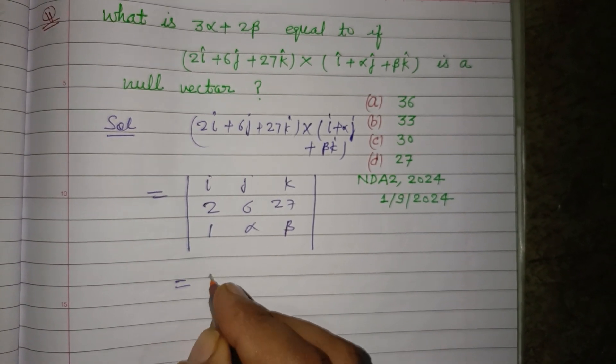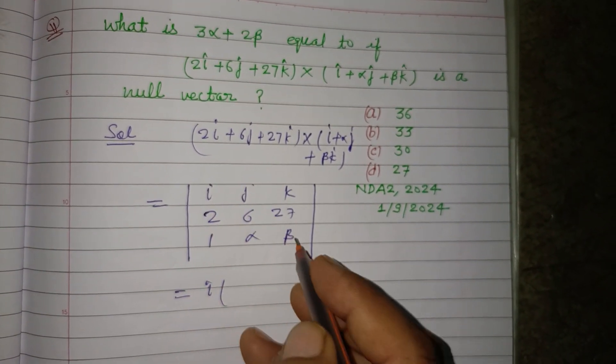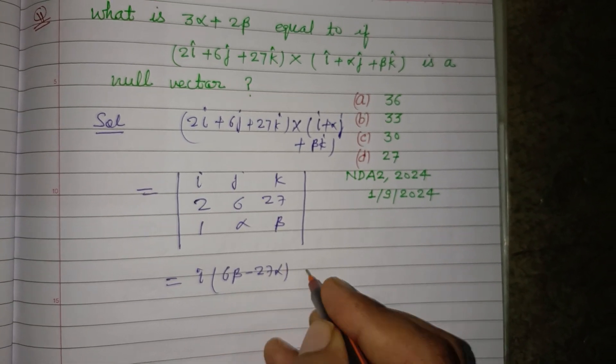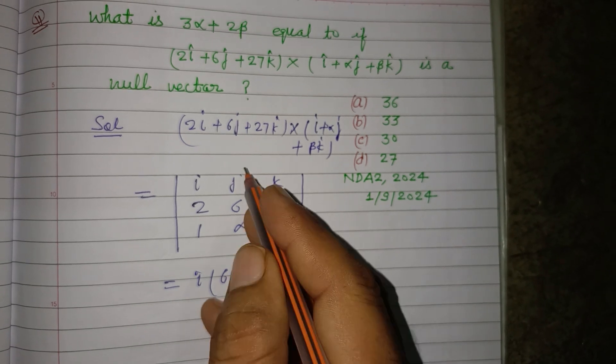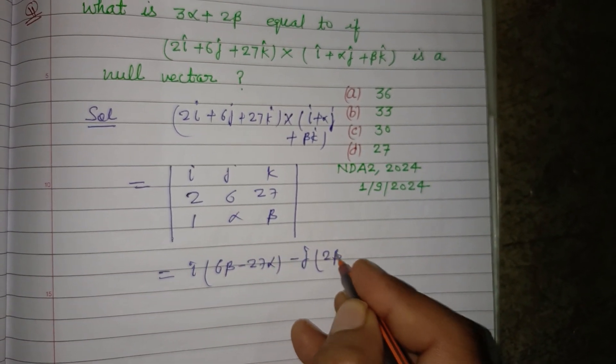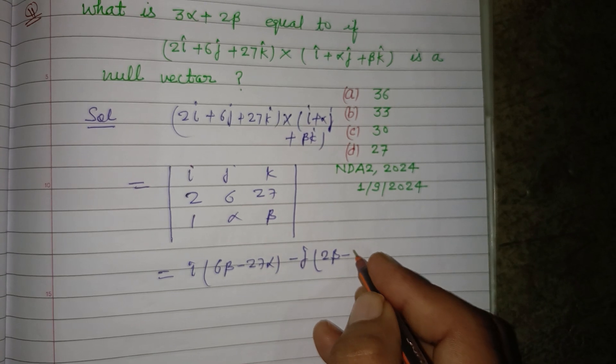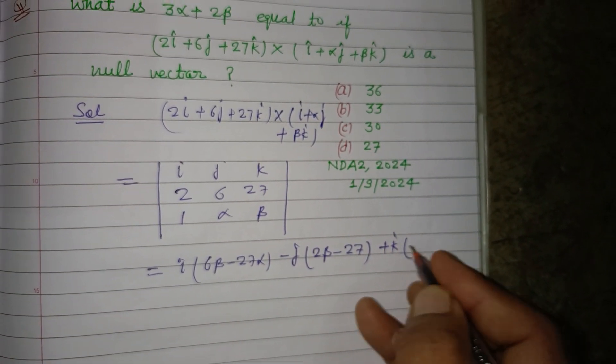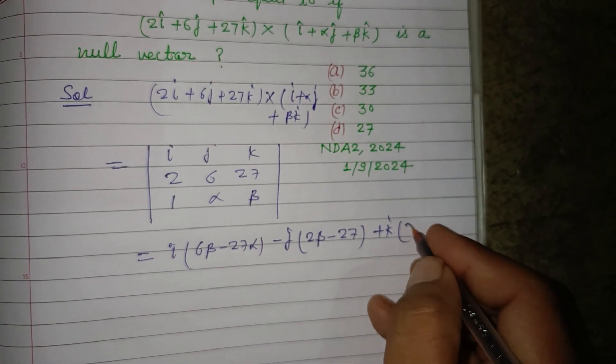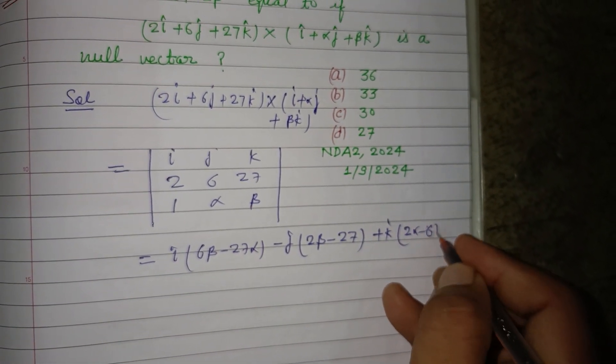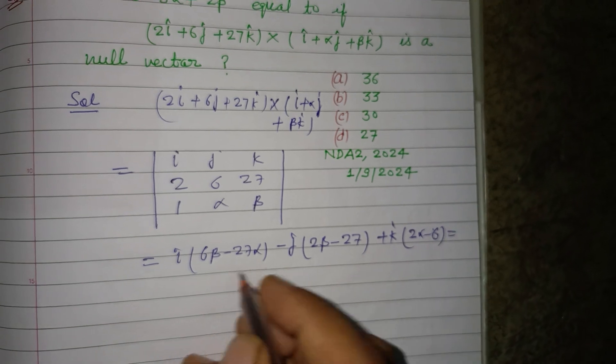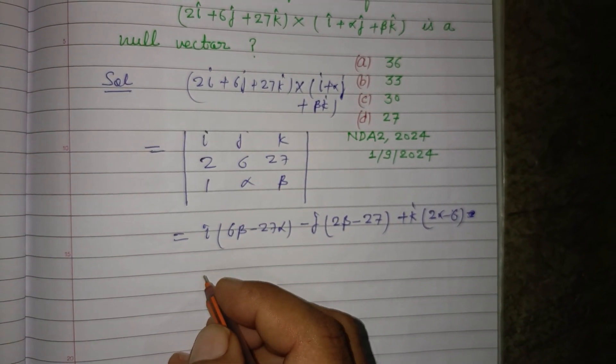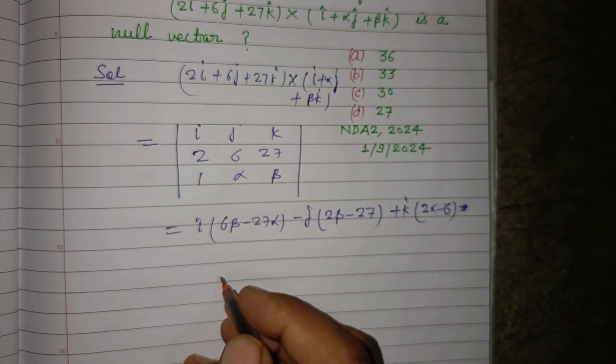Computing the determinant: î(6β - 27α) - ĵ(2β - 27) + k̂(2α - 6). Okay, so this is a null vector.